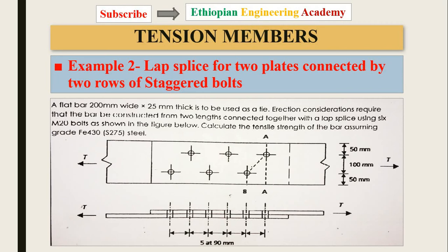Now moving to Example 2: a lap splice for two plates connected by two rows of staggered bolts. The first example used straight parallel bolts; in this example the dimensions are the same but the bolts are arranged in a staggered or zigzag manner. Therefore we must consider two failure modes along different paths through the bolt pattern.